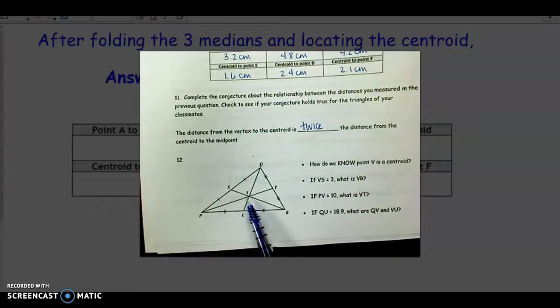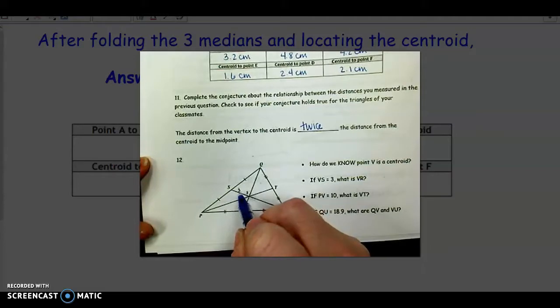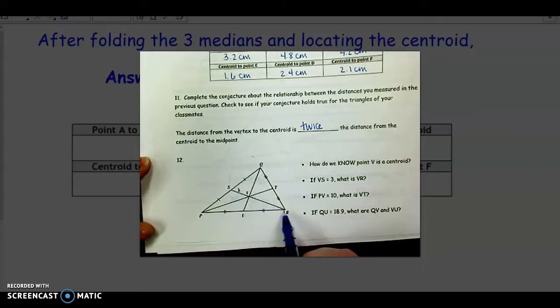So I don't have to be told that in words. I can see from the symbols that these are medians, and we know that they intersect at the centroid. So on the first part, we are given that V to S is 3, and we want to know what V to R is.